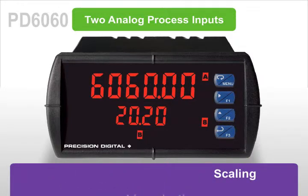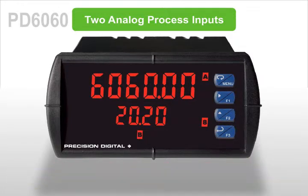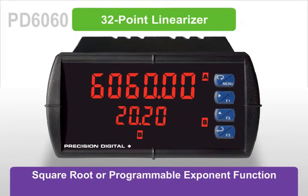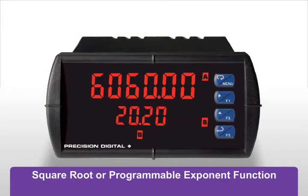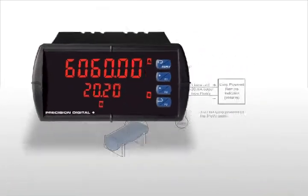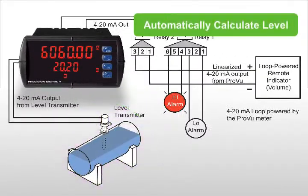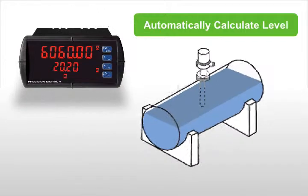The ProView input linearization includes a 32-point linearizer, can perform a square root or programmable exponent function, or automatically calculate the level in round horizontal tanks by inputting the length and height of the tanks.